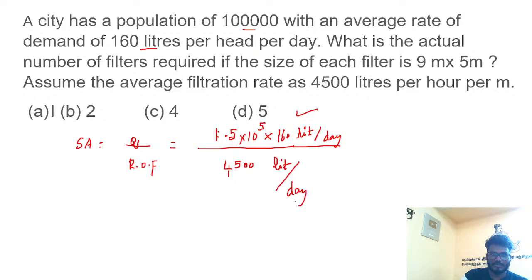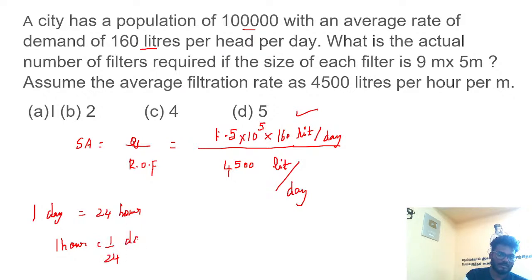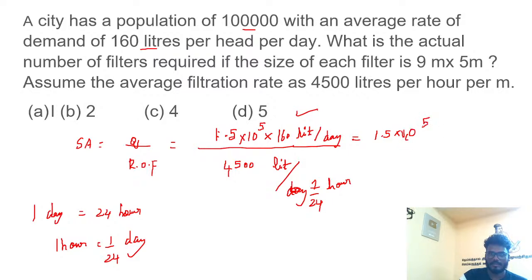The rate is in liters per hour, not per day, so 1 day = 24 hours, meaning 1 hour = 1/24 day. Substituting, instead of day we substitute 1/24 hours. So we get: 1.5 × 10⁵ × 160 / (4500 × 24) liters per hour per meter square.